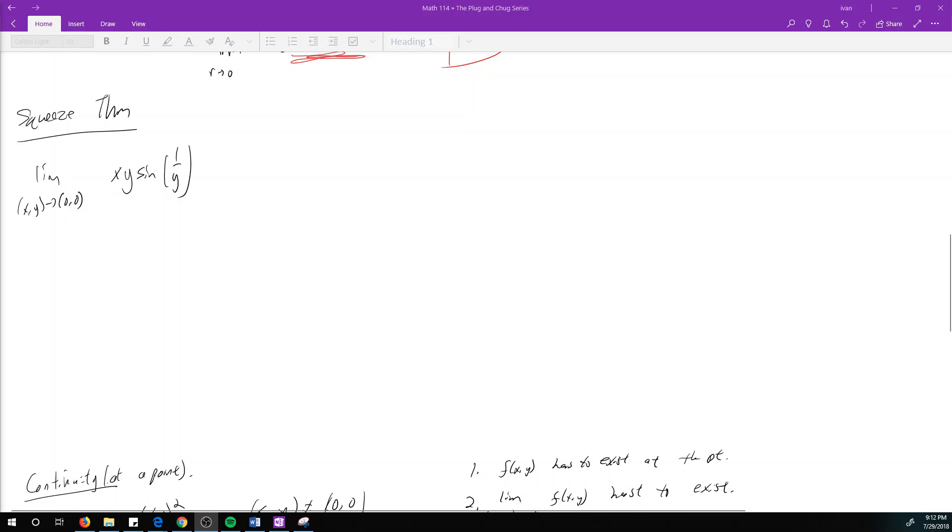Let's take a look at this limit then, the limit as x,y approaches 0,0 of xy sin(1/y). We can't just plug in 0,0 into this because you got sine 1 over 0, which doesn't make sense.